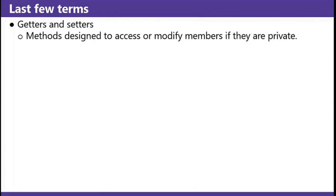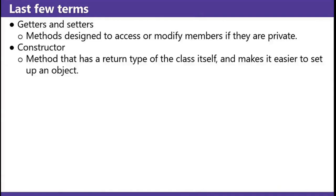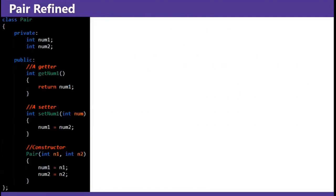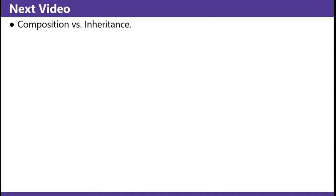Getters and setters: methods designed to access or modify members if they are private. Constructor: a method that has a return type of the class itself and makes it easier to set up an object. PairRefine: now it has a method getNum1 that returns num1 because num1 is private. It has a method where you can set num1 — and there's a typo in that one, num1 should be set to 'num' which is the argument in the function. And then the constructor Pair(n1, n2) sets n1 and n2 to num1 and num2. In the next video, we'll cover composition and inheritance. Ciao.